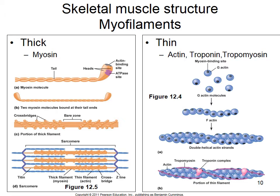Tropomyosin moves on and off the myosin binding sites on actin depending on what troponin tells it to do. Troponin is a regulatory protein that tells tropomyosin to either cover or uncover the binding sites. When tropomyosin is covering the sites, there's no contraction. When troponin moves tropomyosin off the myosin binding sites on actin, contraction can occur.